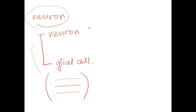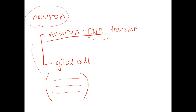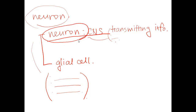The neuron is the cell that is in the central nervous system, and this cell has the main function of transmitting information, which is the main function of our nervous system. It creates signals so that it can convey to the periphery of our body or convey to another neuron. This is the main part of our nervous system when we focus on transmitting information.